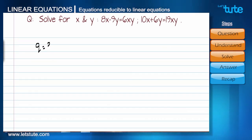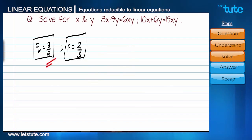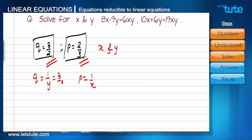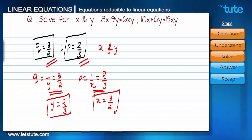We already have q equals 3 by 2 and now we got p equals 2 by 3. But our aim is not to find values for q and p, but we have to find values for x and y. As we know we have taken q for 1 by y and p for 1 by x. Since q is 3 by 2, 1 by y becomes 3 by 2. And p is 1 by x, so 1 by x becomes 2 by 3. From this we can say that y is 2 by 3, and x is 3 by 2.